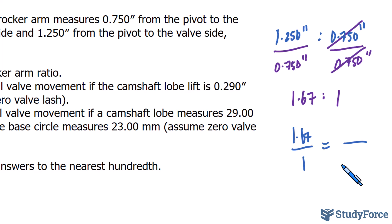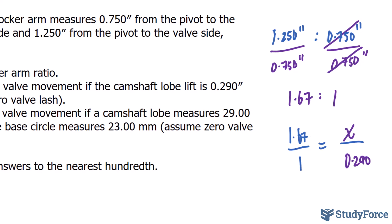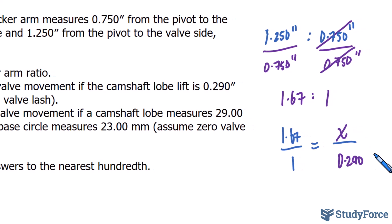So in our new fraction, we will write down 0.290 at the bottom so that it's consistent. And at the top, that value will be unknown to us. And what we're looking for is that value of x.